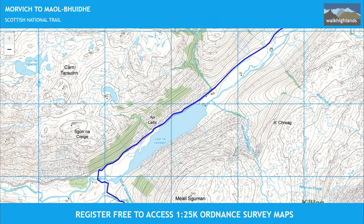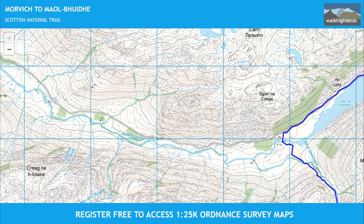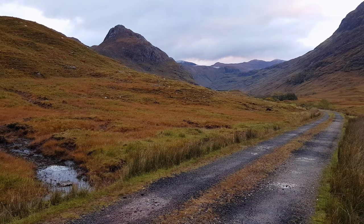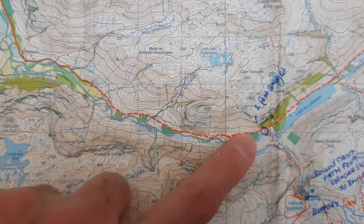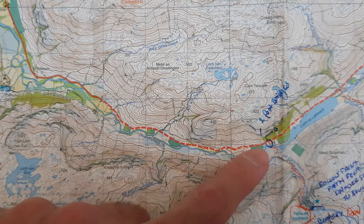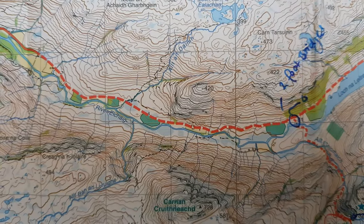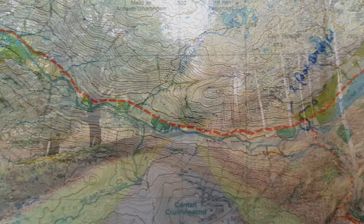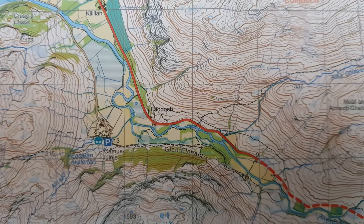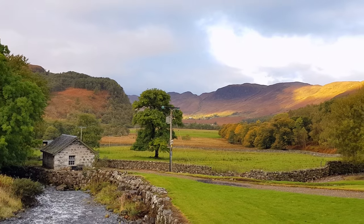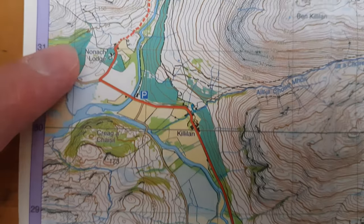I never took this particular path so I cannot tell you what's going on there. Unless you need to resupply, I think I would just go this way — a nice and easy track. You can even see it on the map. Officially you go right, but you can go left if you head to Strathcarron. I'll zoom in so you can see the path. This is the Harvey maps, by the way, so you have an alternate — nice to have.